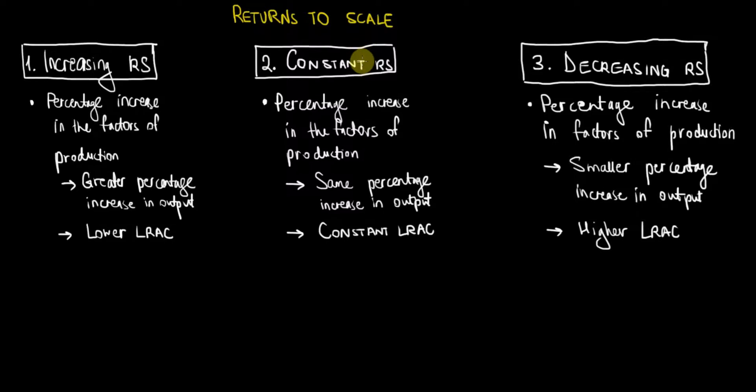Once it incurs those costs, the question is: how much more output does it create? This is where returns to scale comes into play. We have three types: increasing, constant, and decreasing returns to scale. I wrote here the properties of each. Now I want to go through them.